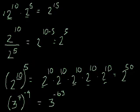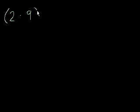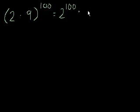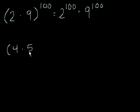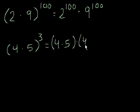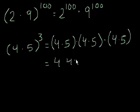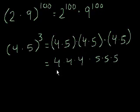Now I'm going to teach you one final exponent property. If I have 2 times 9, and I raise that whole thing to the 100th power, it turns out this equals 2 to the 100th power times 9 to the 100th power. Let's verify with a smaller example: 4 times 5 to the third power. That equals 4 times 5 times 4 times 5 times 4 times 5, which is the same as 4 times 4 times 4 times 5 times 5 times 5 — I just switched the order of multiplication. Well, 4 times 4 times 4 equals 4 to the third, and 5 times 5 times 5 equals 5 to the third.